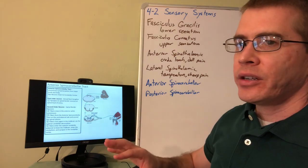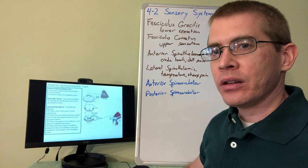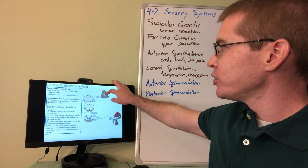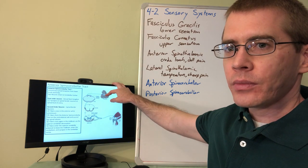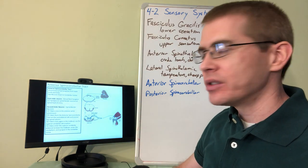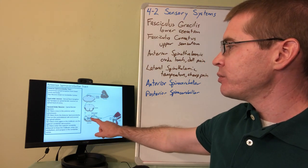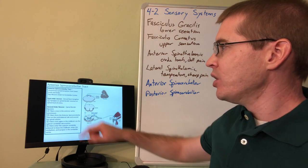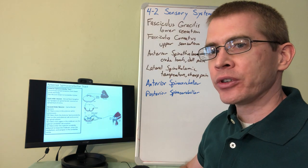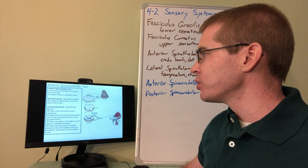The anterior spinocerebellar tract enters the ipsilateral cerebellum but it crosses twice to get there. So first that central process will synapse on a spinal border neuron toward the edge of the dorsal horn.